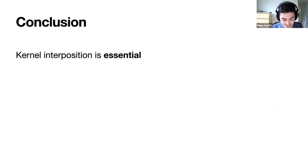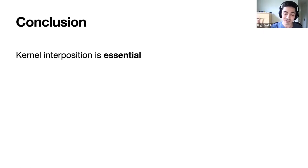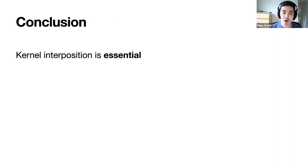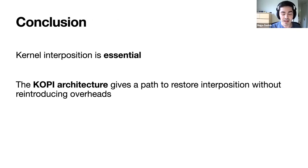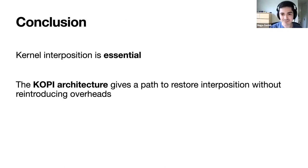To conclude, I hope I have convinced you that kernel interposition is essential. Having a design that might bypass the kernel but gives up all the features that operators and developers expect is not really solving your problem — you also need to re-implement these kinds of features. The COPI architecture gives you a path to restore kernel interposition without reintroducing overhead. With that, thank you and I'm happy to take any questions.